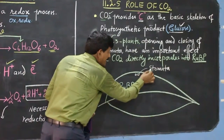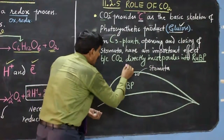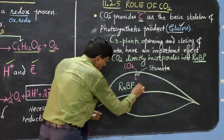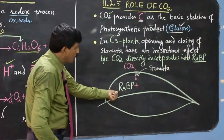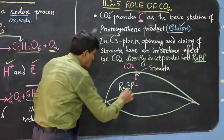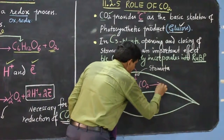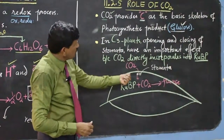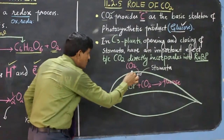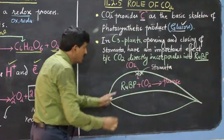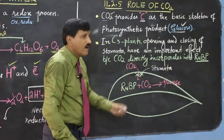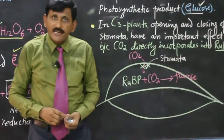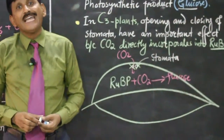During the daytime, when the stomata are open, the photosynthetic product glucose is produced. When the stomata are closed, carbon dioxide absorption stops, so the photosynthetic product is affected in C3 plants.